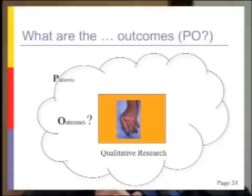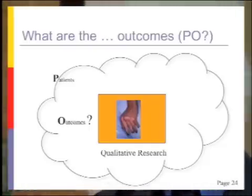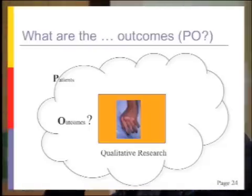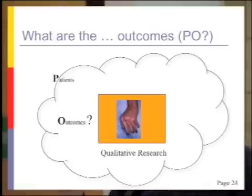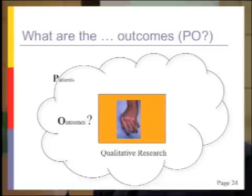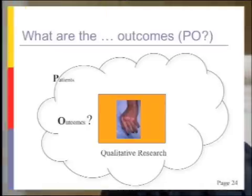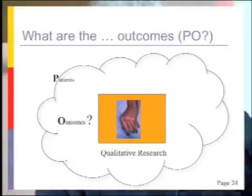Sometimes we're just interested in the outcome itself — what's important to patients? This I'd call a P.O. question mark question. We don't know what the outcomes are that are important to patients. Let me give you one specific example: a patient with rheumatoid arthritis. What do you think the most important symptom or problem for a patient with rheumatoid arthritis is?